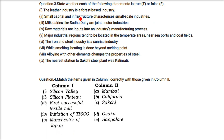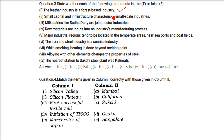True and false: The leather industry is a forest-based industry — this is true. Small capital and infrastructure characterises small-scale industry — this is also true. Milk dairies like Sudha dairy are joint sector industry — no, they are cooperative industries. Raw materials are inputs into an industry manufacturing process — yes, this is true.